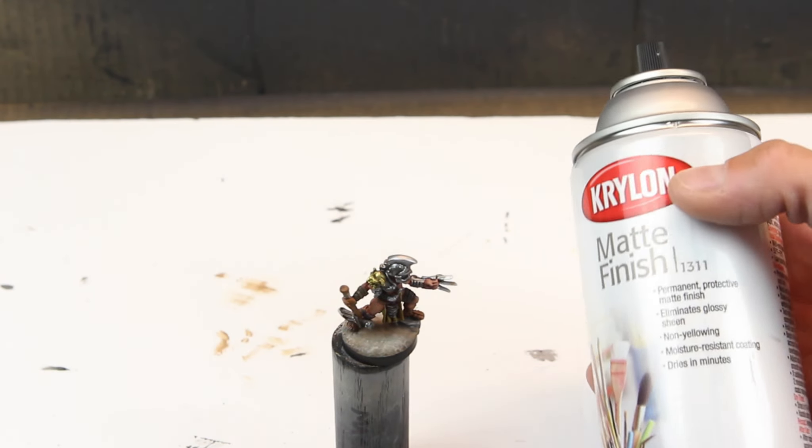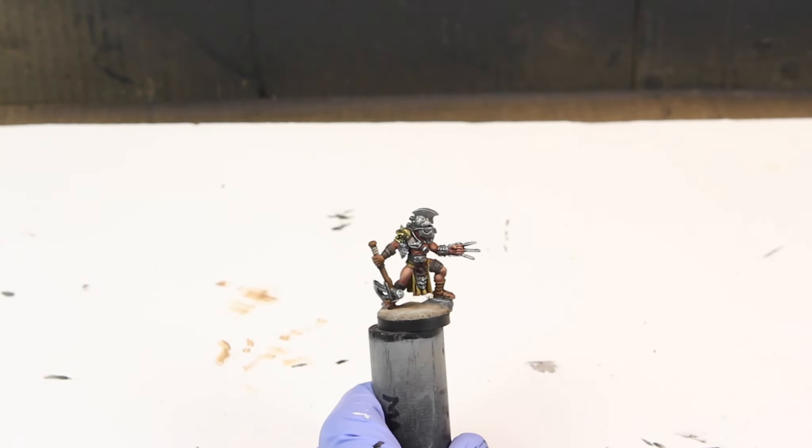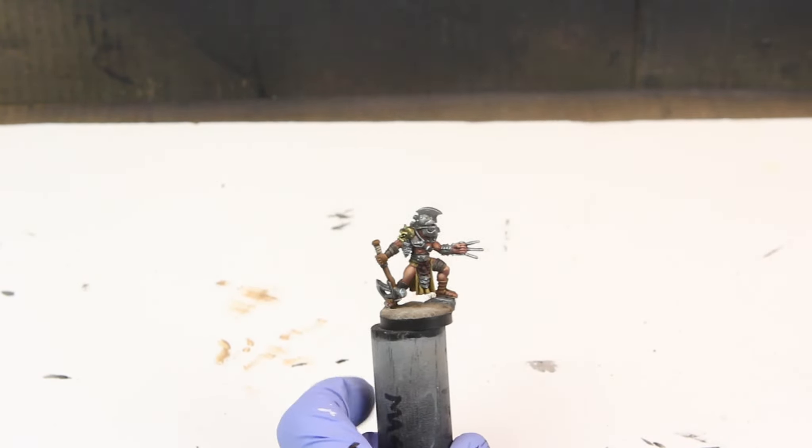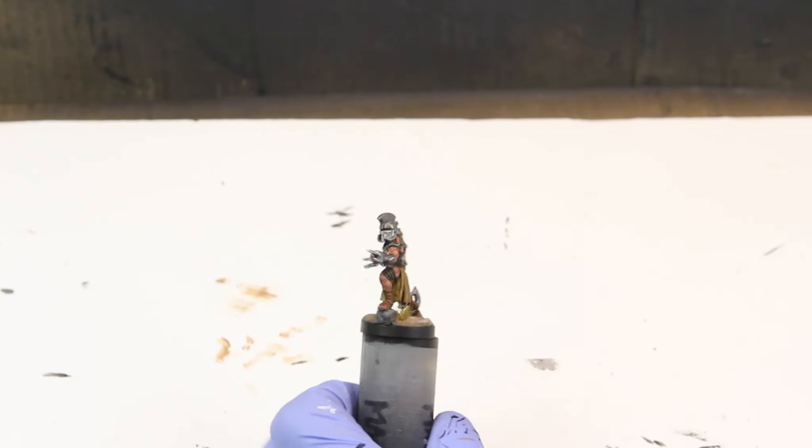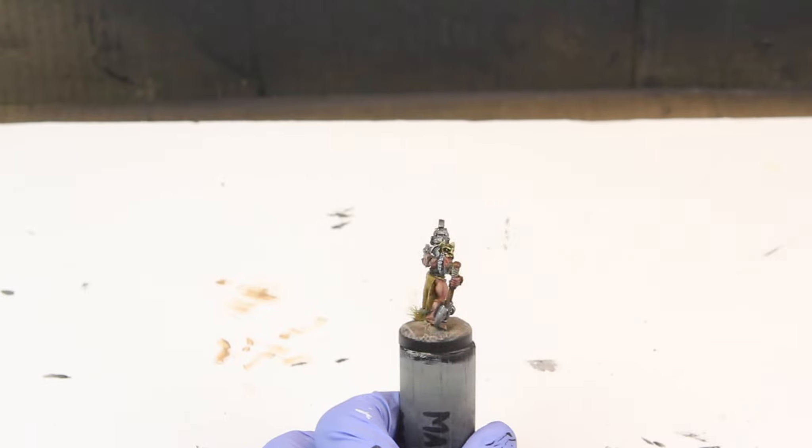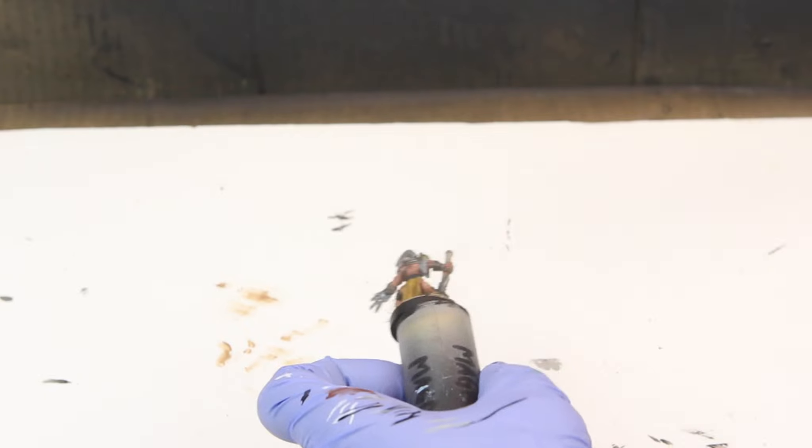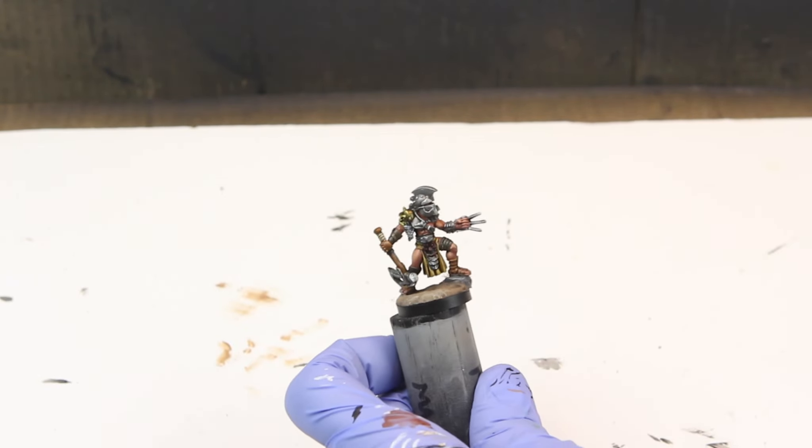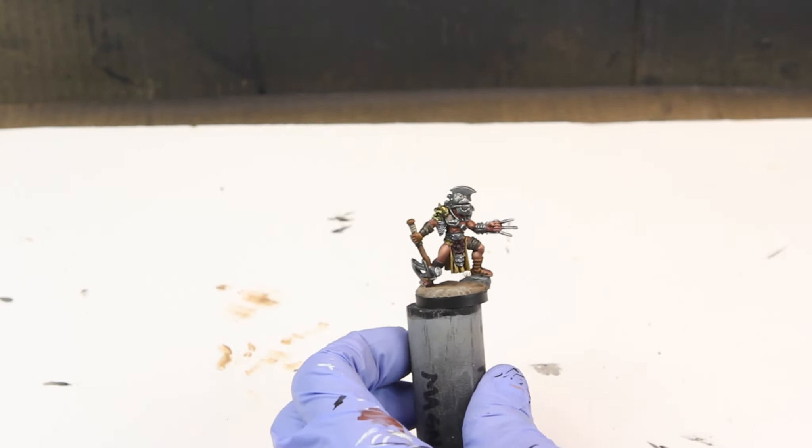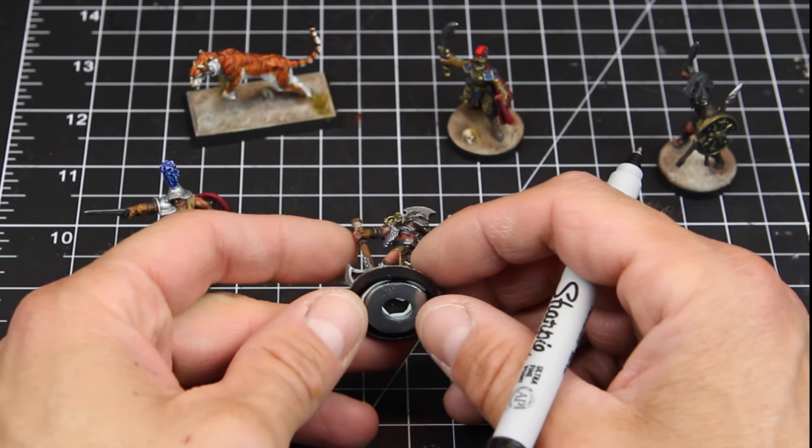So I like to use the Krylon matte finish here. You can see I'm just doing some light bursts. The can is about a foot to a foot and a half away from the model and I'm really just letting the matte finish rest on the model. If you see it built up, if you see it wet and shiny, you're applying it way too heavy and way too close. It's a problem for miniatures and it's definitely a problem if you're applying that to foam terrain.